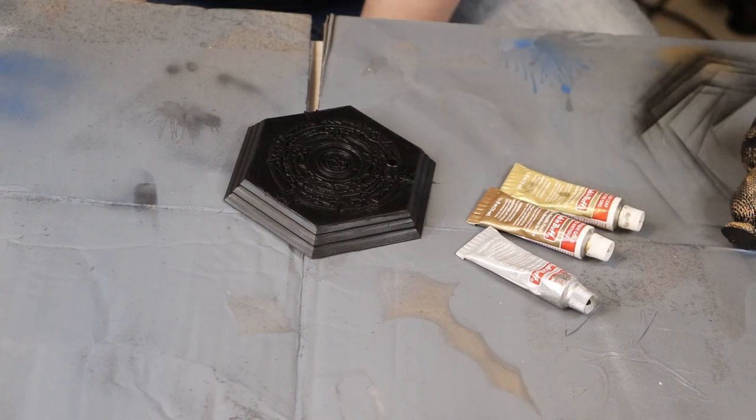And for those of you that don't know, Rub'n Buff is like a paint that makes things look metallic. It makes it look like real metal.